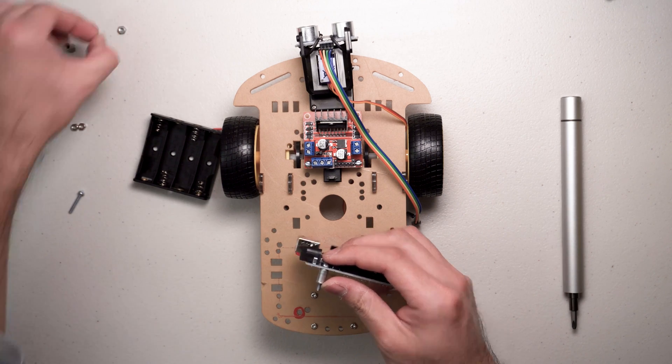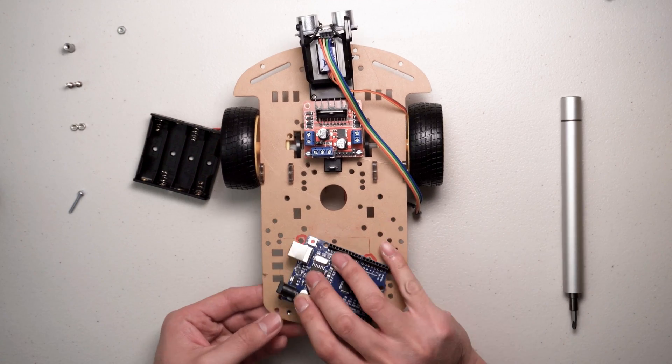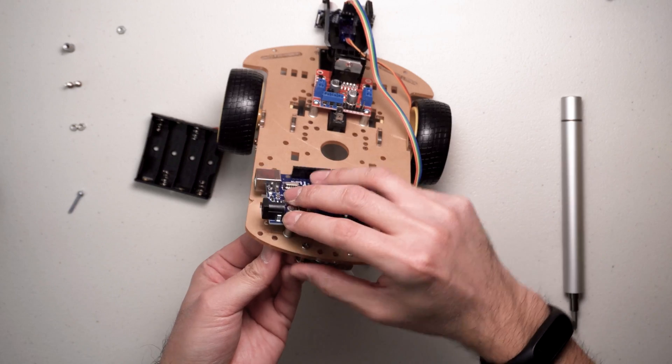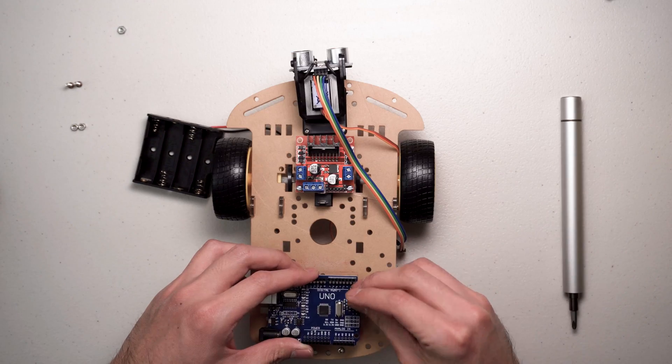Here, we'll use some screws and standoffs to mount the Arduino. Two screws installed diagonally should be good enough, but here I installed three of them.